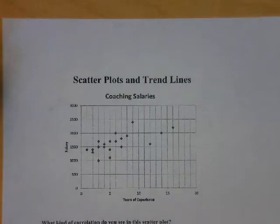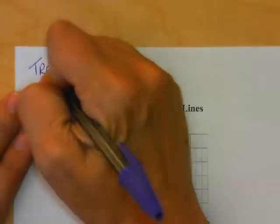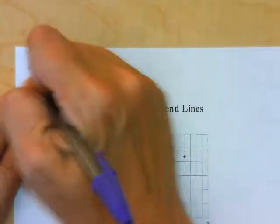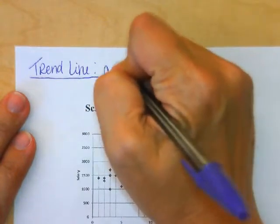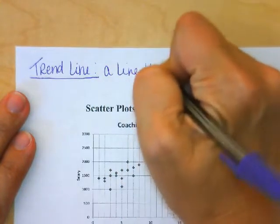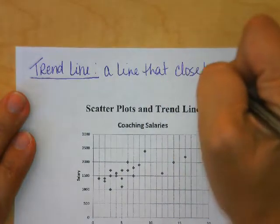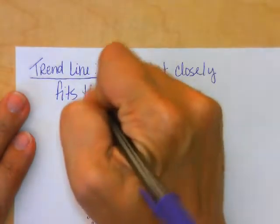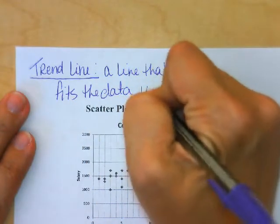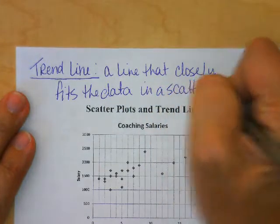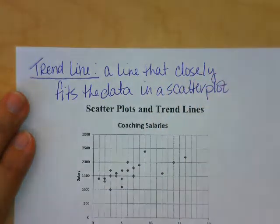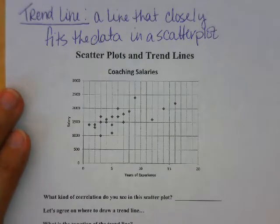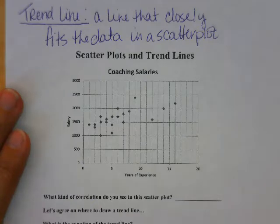So what we're going to look at today is a trend line. A trend line is a line that closely fits the data in a scatterplot. We talked about weak correlation versus strong correlation before, and that's what we need to keep in mind when we draw a trend line.